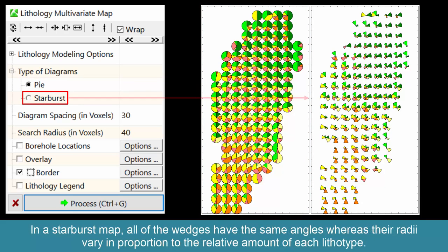In a starburst map, all of the wedges have the same angles, whereas their radii vary in proportion to the relative amount of each lithotype.